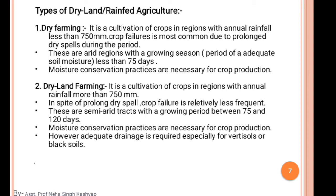In dryland farming, adequate drainage is required especially for Vertisol or black cotton soil. Black cotton soil has very low soil porosity and is very compact, so proper drainage canals are necessary. Moisture conservation practices are also very important in the dryland farming area because of the risk of moisture stress and crop failure during dry spells.